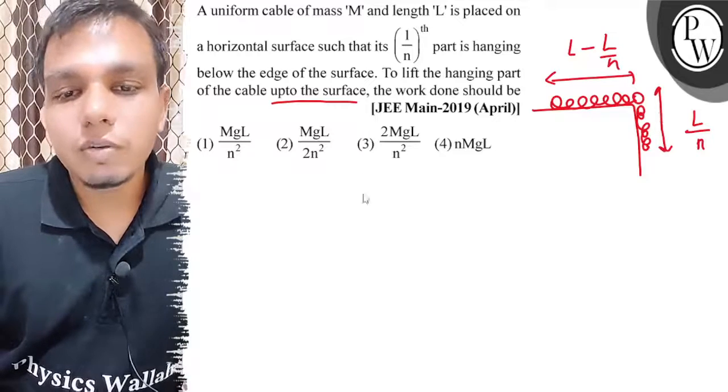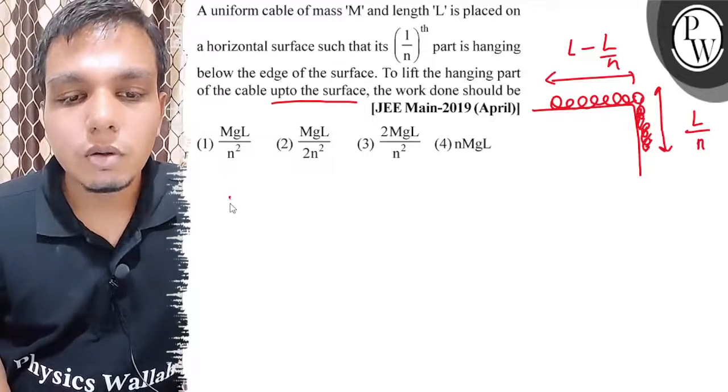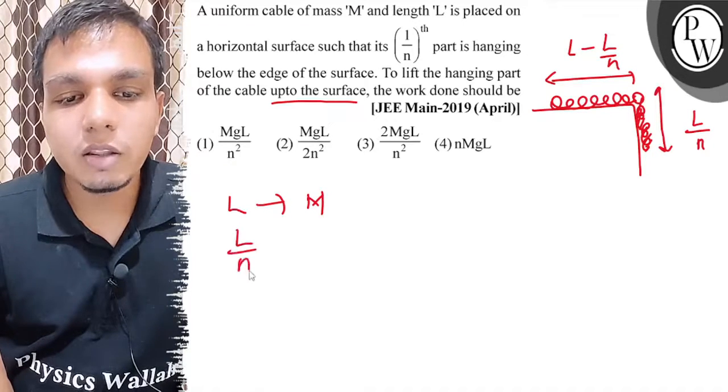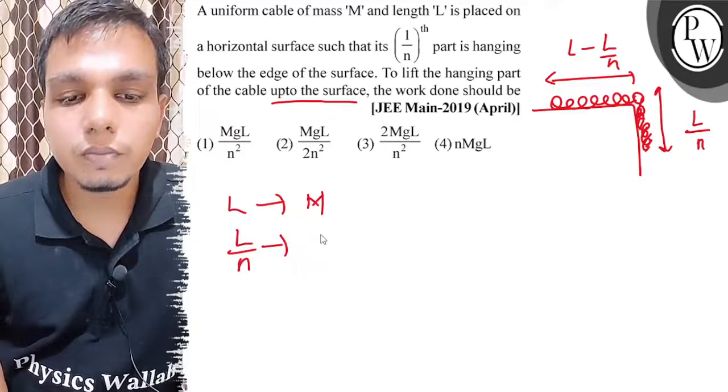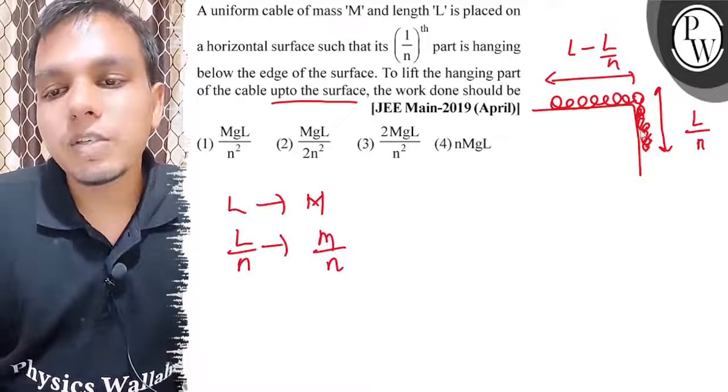The total mass is m. So we can call this part of mass m. If l length has mass m, then l/n length has mass m/n. So this hanging part has mass m/n.